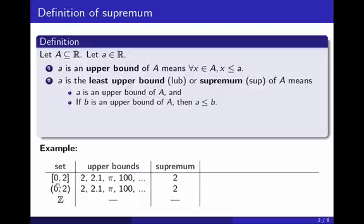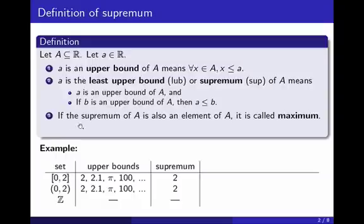Now, the difference between these two examples is that in the first one, the supremum is an element of the set, and in the second one it isn't. Well, that's what we call a maximum. So when the supremum is also an element of the set, then we call it a maximum. So the first set has 2 as both the maximum and the supremum. In the second set, 2 is only a supremum but is not the maximum. And the third set has nothing.